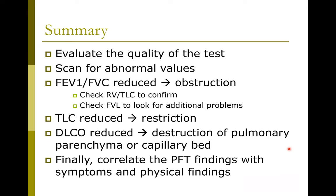In summary, when facing PFTs to interpret: first, evaluate the quality of the test — look at the technician's report, did the patient give good effort, look at the flow volume loop, and decide if this is a reliable test. Quickly scan for abnormal values. If abnormalities are in the FEV1 range, look for FEV1 over FVC ratio — if reduced, typically obstruction; check RV over TLC to confirm and flow volume loop for additional problems. If the majority of abnormalities are in the TLC range, a reduced TLC is usually a sign of restriction. Reduced DLCO typically means destruction of the pulmonary parenchyma or destruction of the capillary bed.